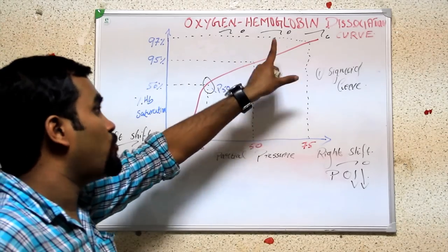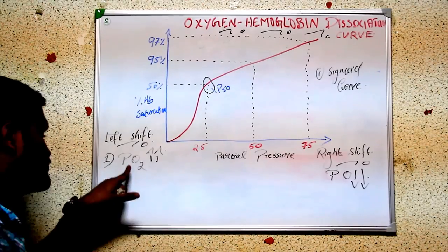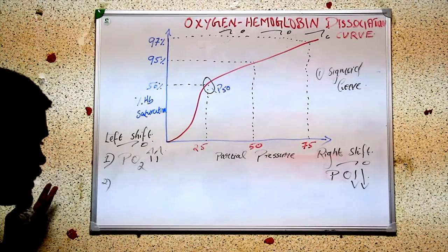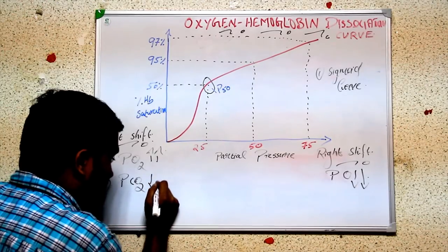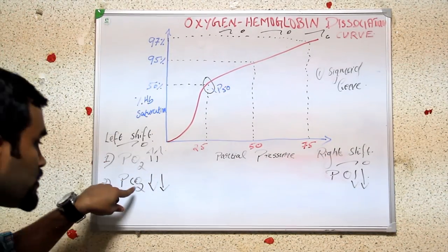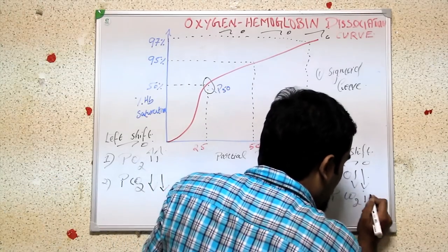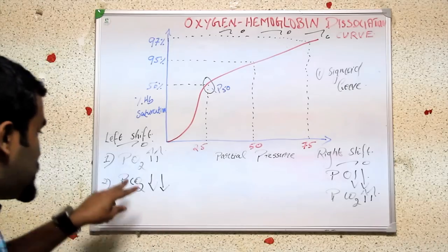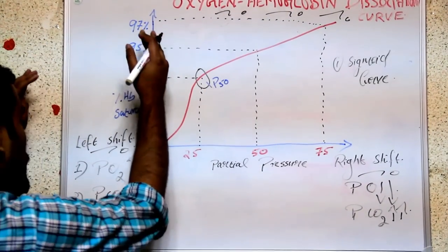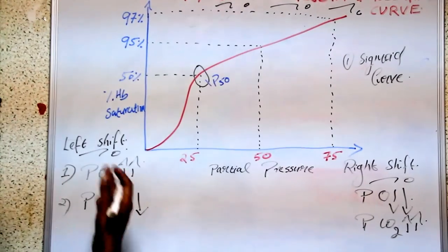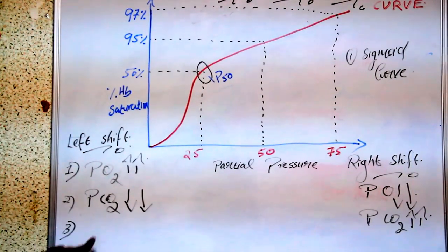The second factor is carbon dioxide. If partial pressure of oxygen is increasing, carbon dioxide must be decreasing. So for left shift, the partial pressure of CO2 is decreased. For right shift, the partial pressure of CO2 is increased. No need to memorize — just remember it is opposite to oxygen: more oxygen means left shift, so more CO2 means right shift.